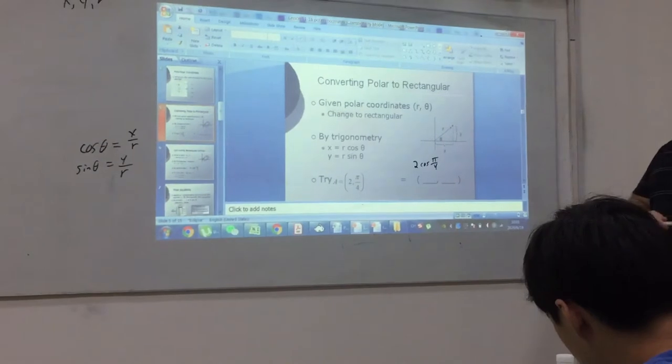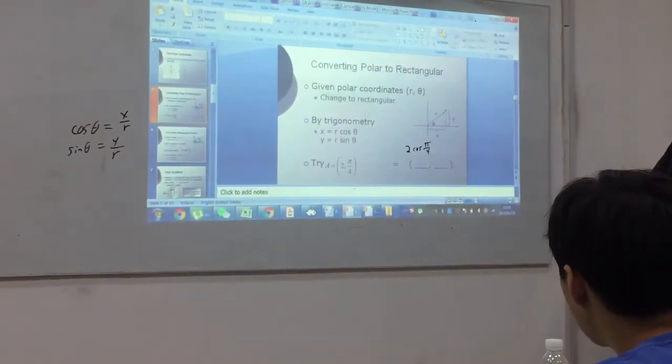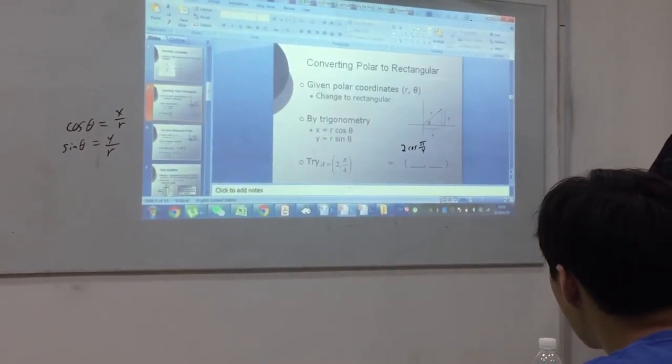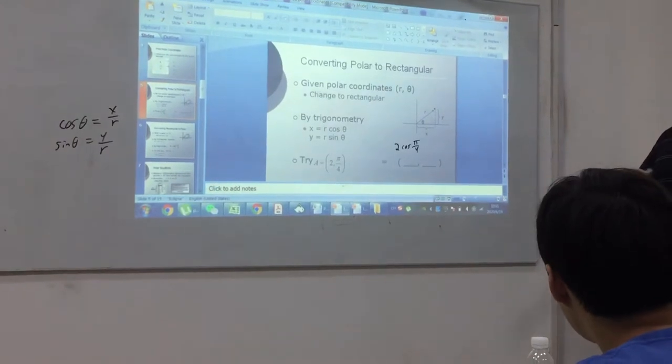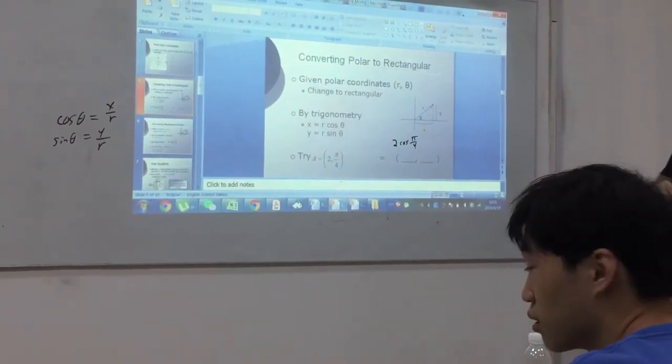So somebody tell me, what is cosine of pi over four? I know somebody knows. Square root of two over two. Good.